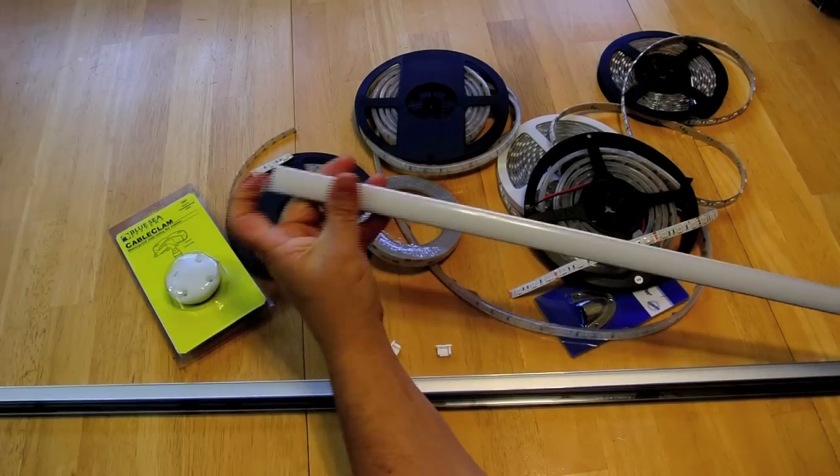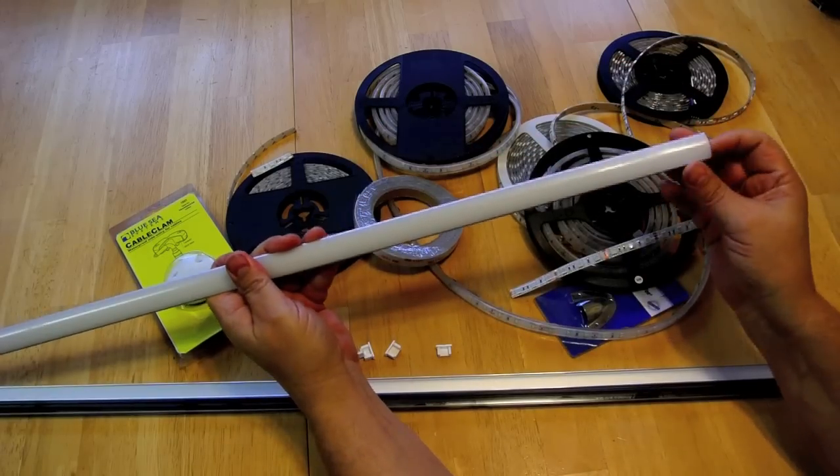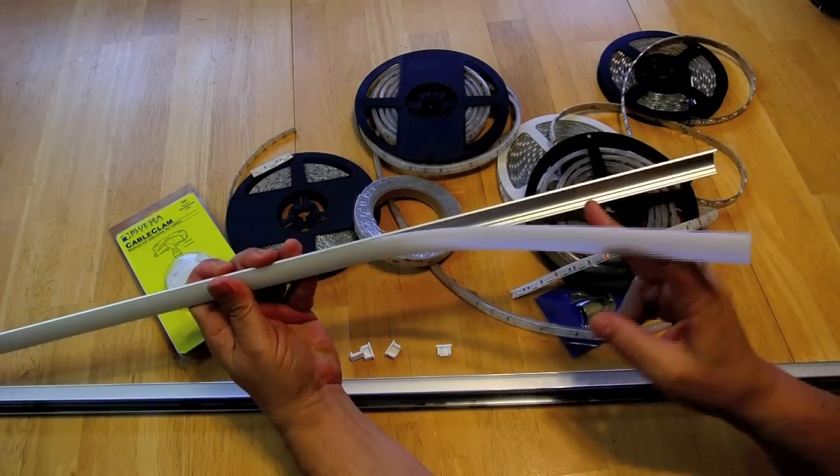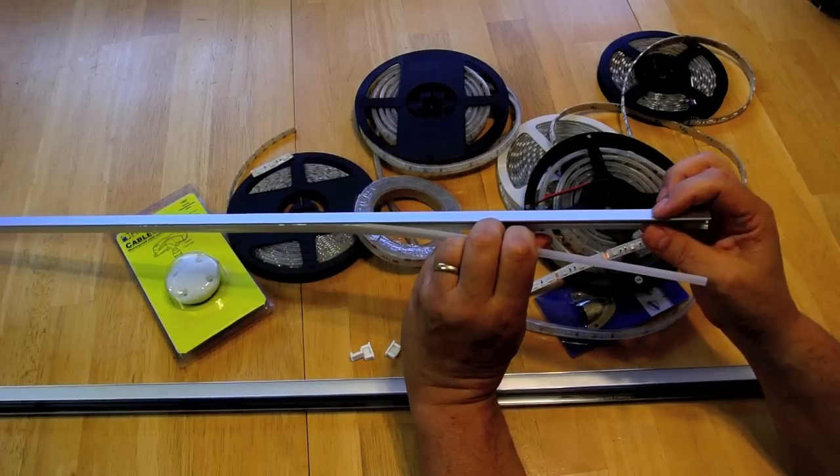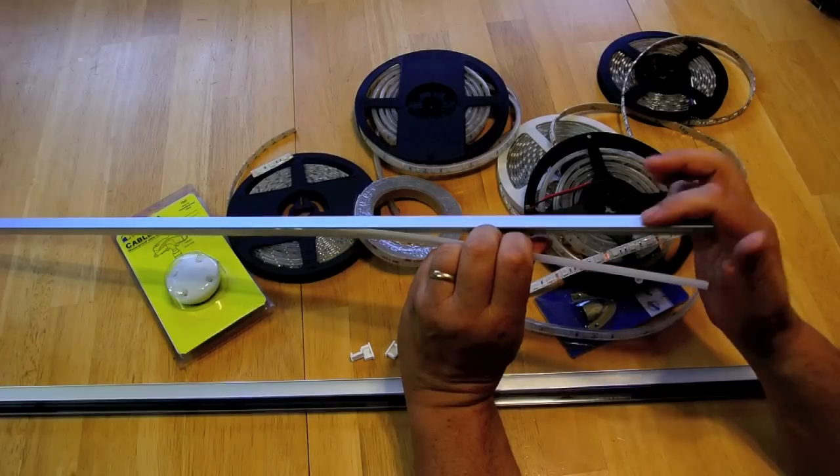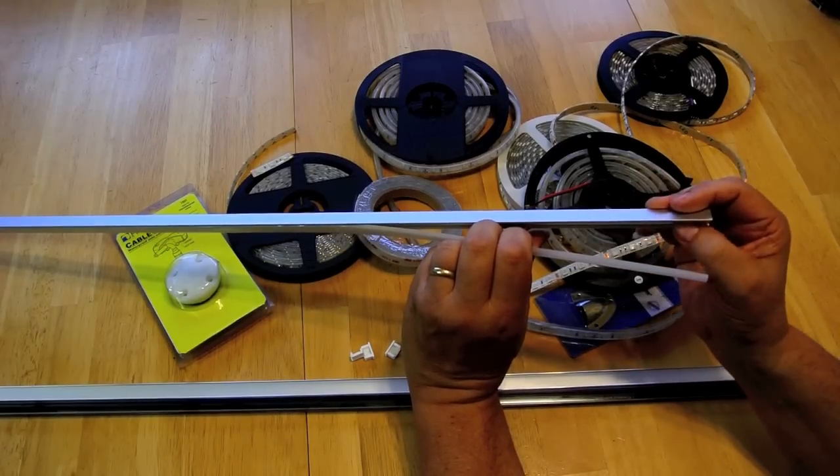Now these strips do have a removable plastic cover. So essentially you would mount the strip on your coach and you could use 3M VHB on this or you could use screws.